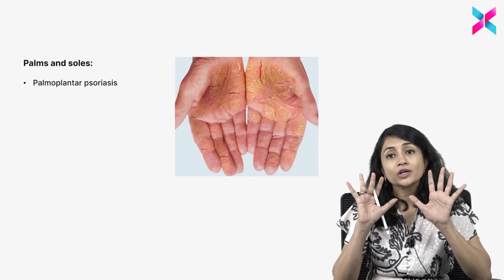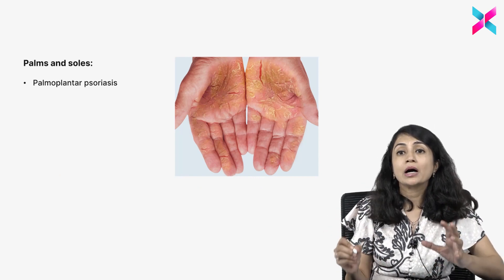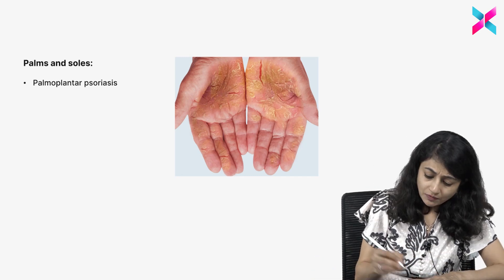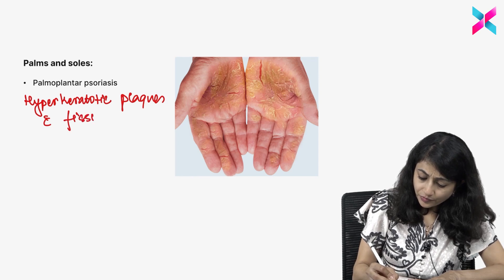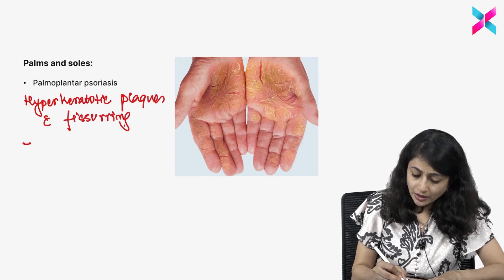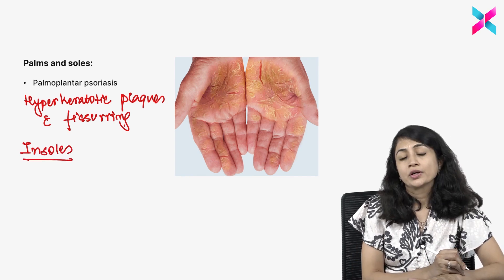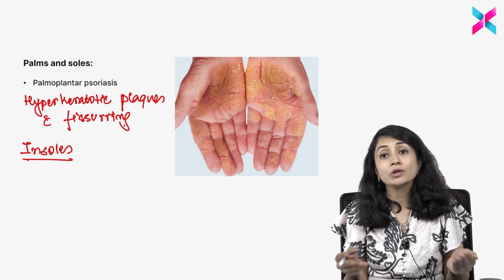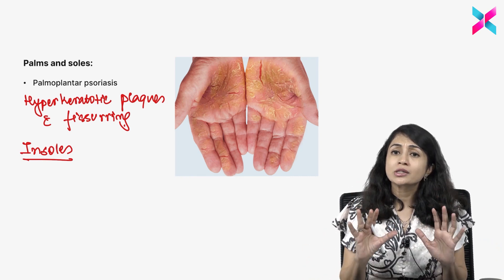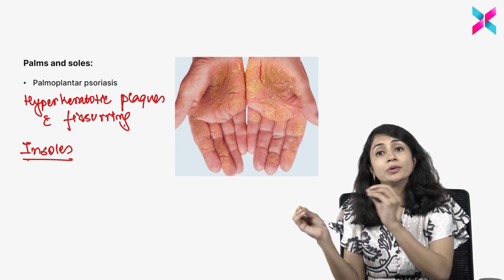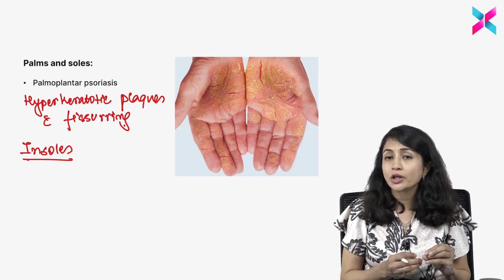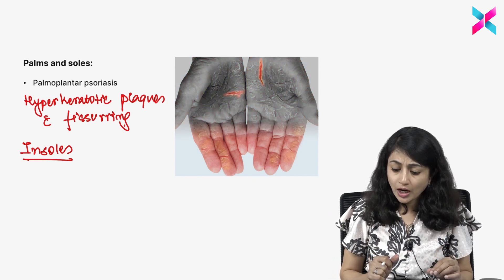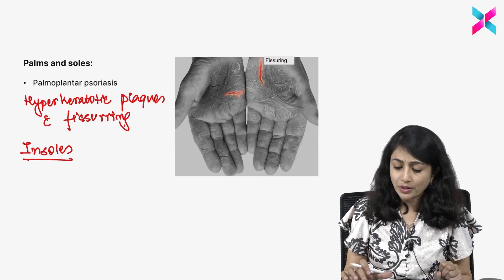Psoriasis can sometimes affect just the palms and soles, in which case we call it palmoplantar psoriasis. It presents with hyperkeratotic plaques with fissuring, and on the soles it typically affects the instep. The reason for dividing by site is that treatment and differentials change. For palmoplantar psoriasis, we differentiate it from hyperkeratotic eczema — eczema would usually be more itchy and can be oozy, but palmoplantar psoriasis is usually not itchy and not oozy. You see hyperkeratotic plaques with fissuring on the palms and soles.